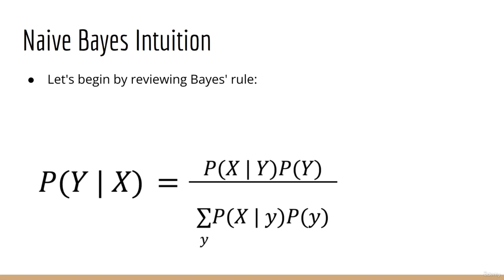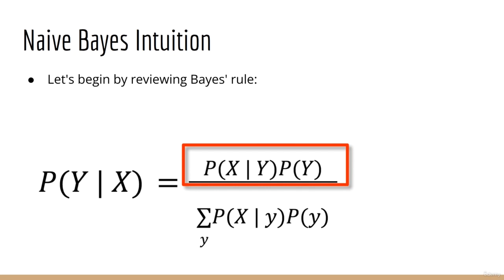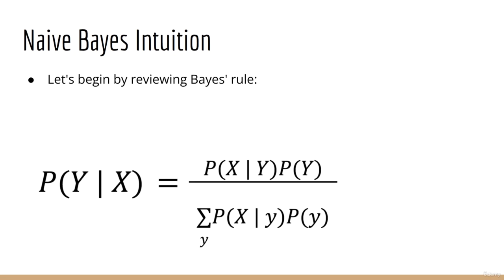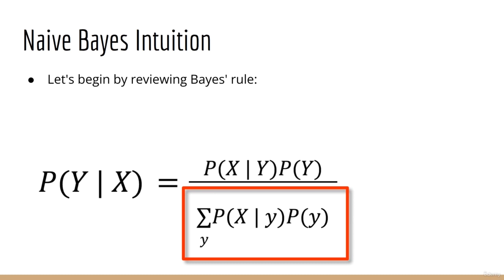In this lecture we will be looking at the intuition behind Naive Bayes. In order to understand Naive Bayes, we must first understand Bayes' rule. This lecture will assume you have at least a passing knowledge of probability. Suppose that we have two random variables x and y, and we want to know p of y given x. Note that this is a conditional distribution because y is conditioned on x. Suppose we are given p of x given y, and also the marginal distribution p of y. We can then express what we want in terms of what we know using Bayes' rule: on the numerator we have p of x given y times p of y, and on the denominator we have the same thing summed over all possible values of y.